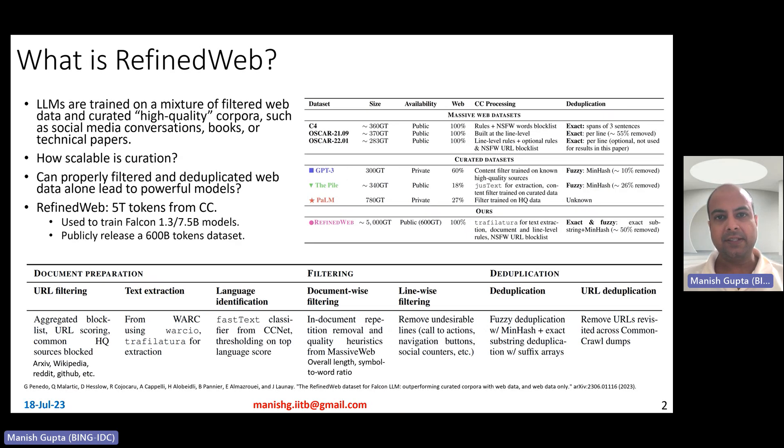What is RefinedWeb? What is the need for coming up with this thing called RefinedWeb? LLMs, the large language models, are trained on a mixture of filtered web data and curated high-quality corpora. Most of these popular LLMs that you see recently have been trained on this mixture. While the main part is still filtered web data, a small part is also this curated high-quality corpora, such as social media conversations, books, technical papers, Reddit, GitHub, all of those.